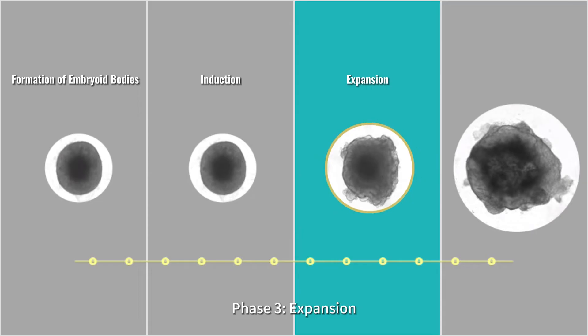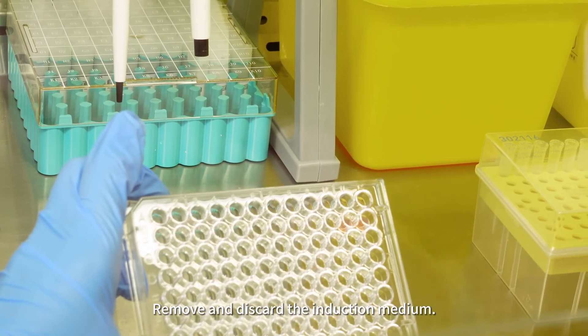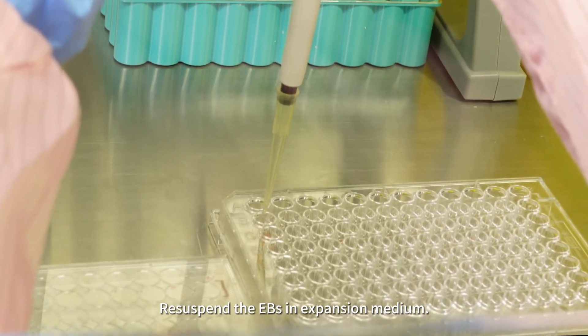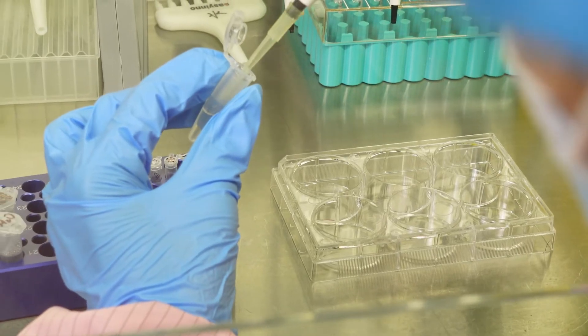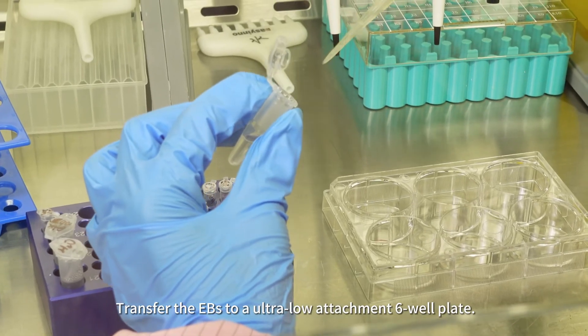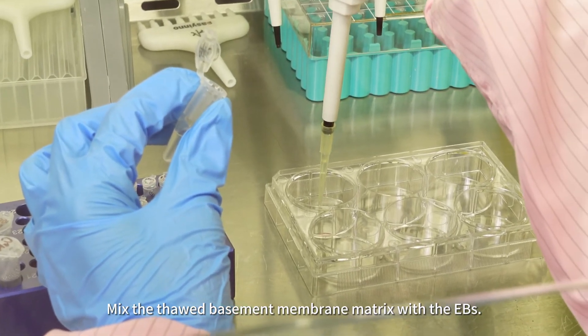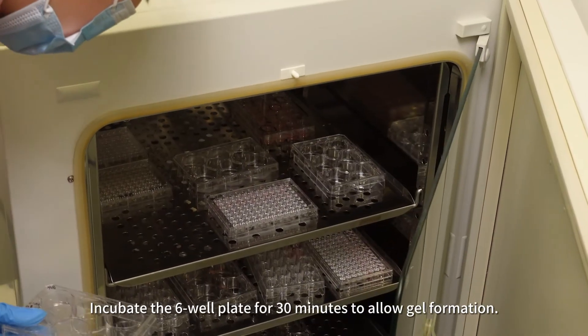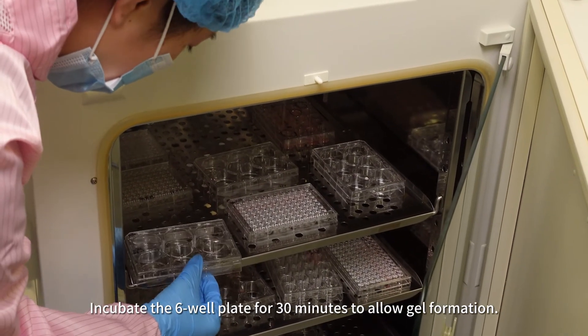Phase 3, Expansion. Remove and discard the induction medium. Resuspend the EBs in expansion medium. Transfer the EBs to an ultra-low attachment 6-well plate. Mix the thawed basement membrane matrix with the EBs. Incubate the 6-well plate for 30 minutes to allow gel formation.